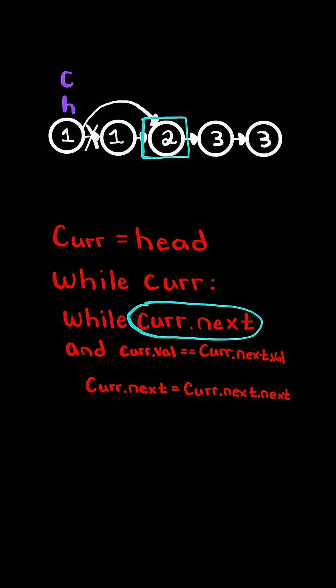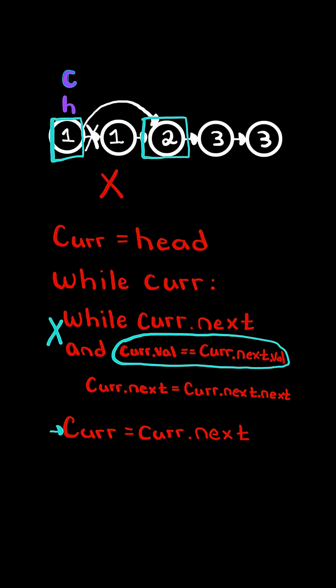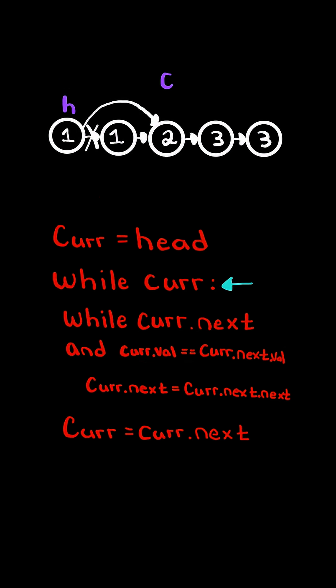Current.next is not null, but notice current.value does not equal current.next value. So in this case, we exit the inner loop, and we advance current forward by setting current equal to current.next, and we continue this algorithm while current does not equal null.